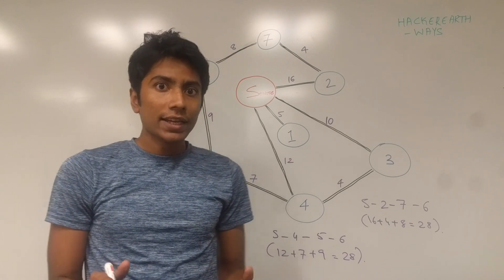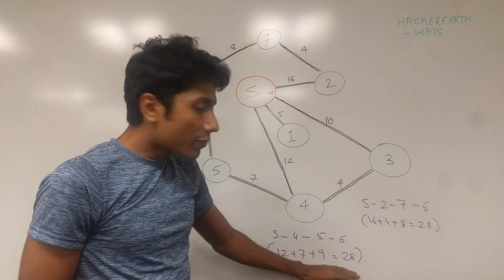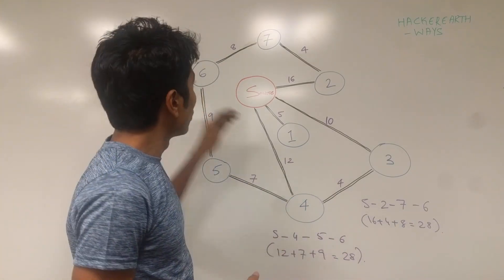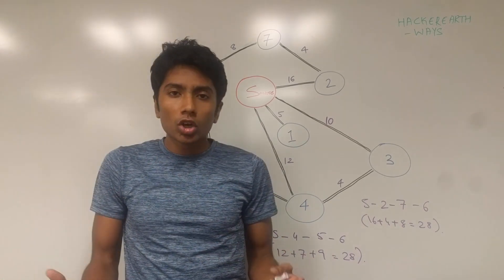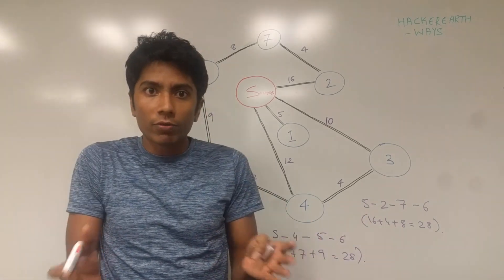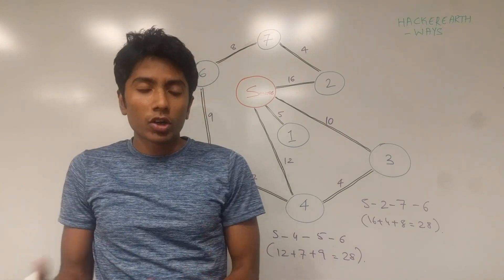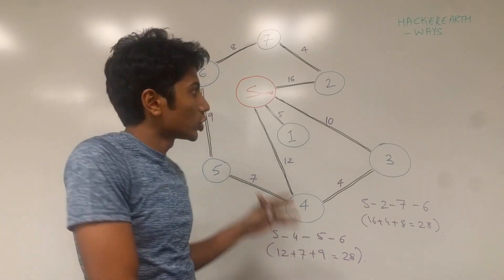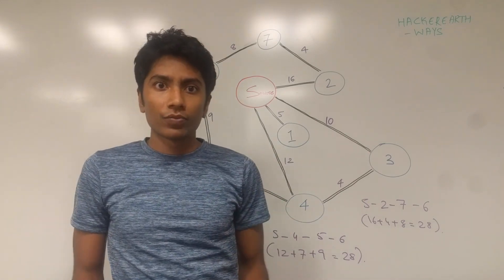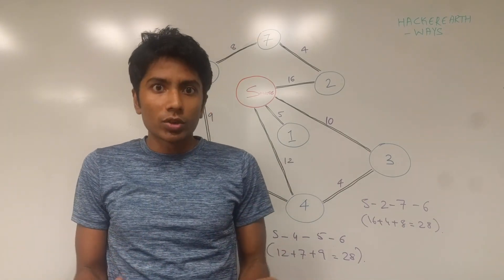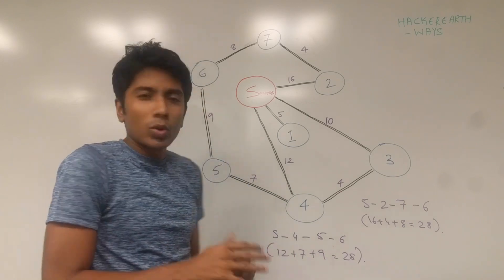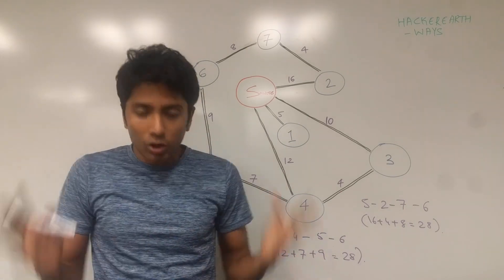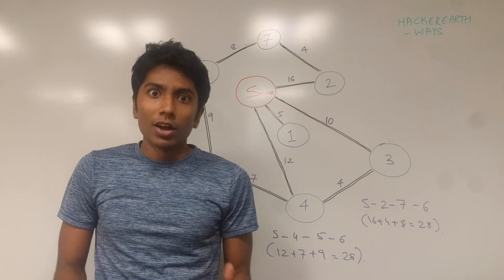Now your job is to find out the number of different ways by which you can get to every city. And overall your job is to actually just multiply the number of different ways that you can get to each city. Because that will give you the number of different combinations of shortest path visits that you can have. For a more detailed description of the question you can look at the link below.